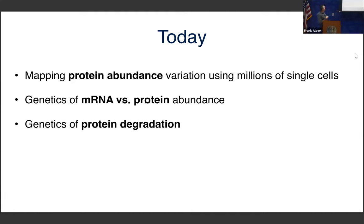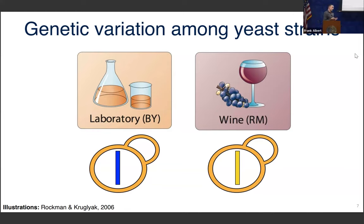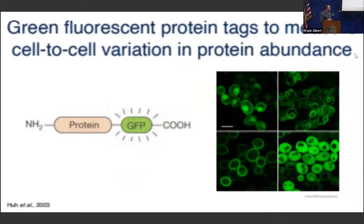In three themes: we'll hear about our work in protein abundance, then look at discrepancies between RNA and protein abundance and their genetic influences, and then look at very recent unpublished work in protein degradation. The system we'll use throughout is the yeast Saccharomyces cerevisiae, this wonderful single-cell fungus that shares a lot of biology with us. We have amazing tools to dissect genetic variation. All the work will be in two strains: a lab reference strain BY, and a vineyard strain called RM.